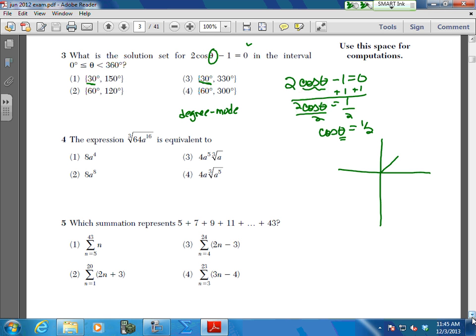Cosine is positive in quadrants 1 and 4. Remember, all students take chemistry. So cosine is positive here and here. This is x over r, 1 over 2. So therefore, your reference angle is 60. So from here to here, it's 60 degrees. From here around to this terminal side, it's 300 degrees. So you're looking at choice 4. But remember, you can put it in your calculator and plug it in there.